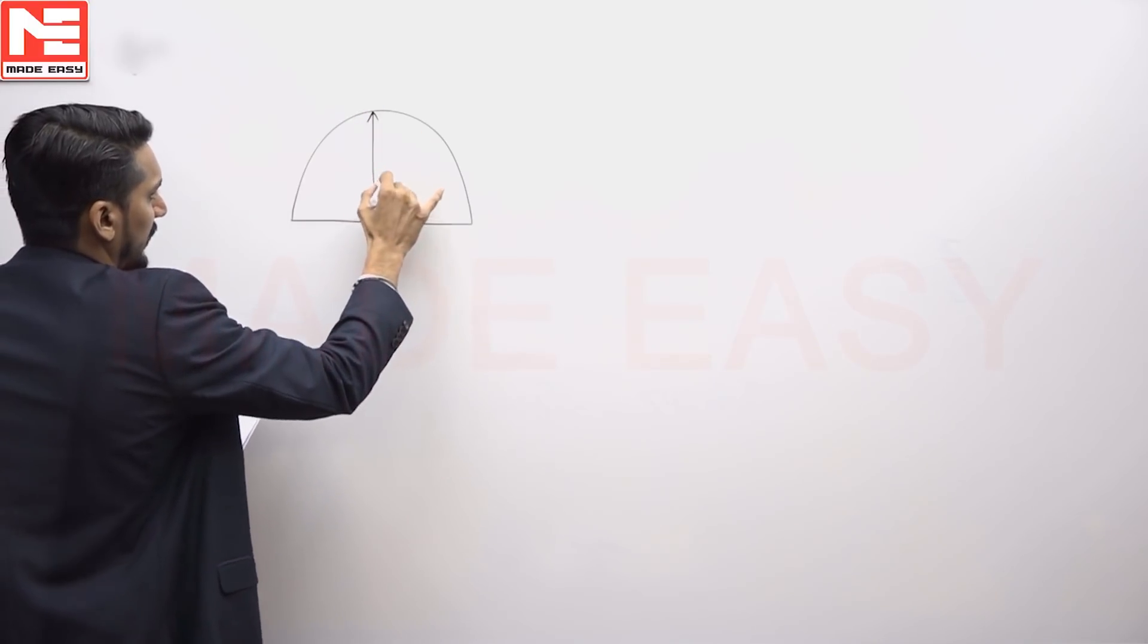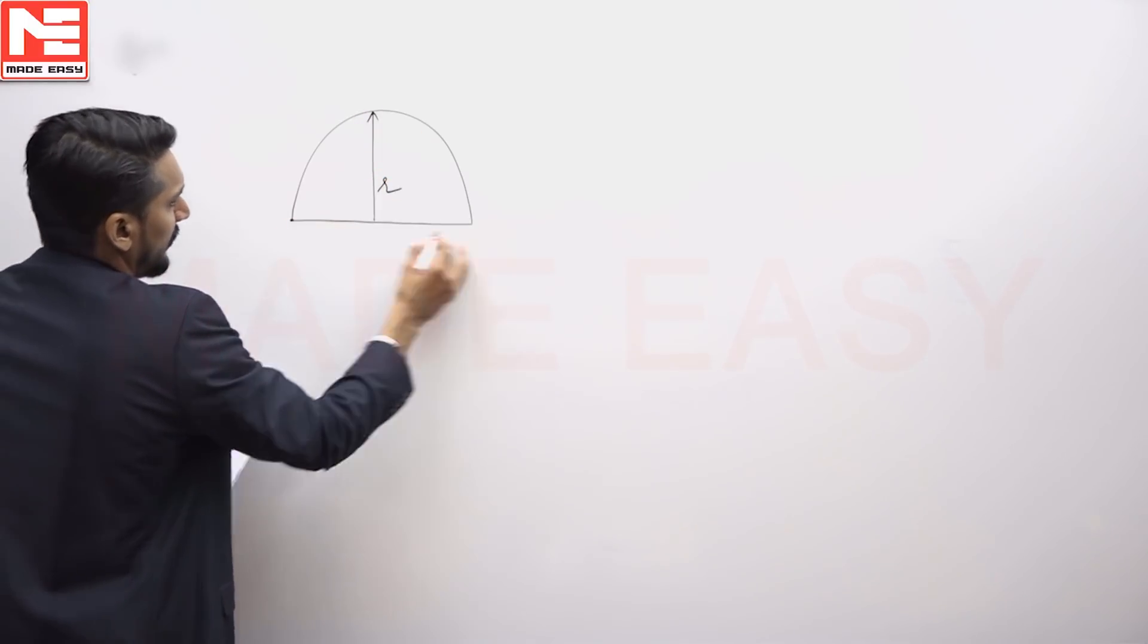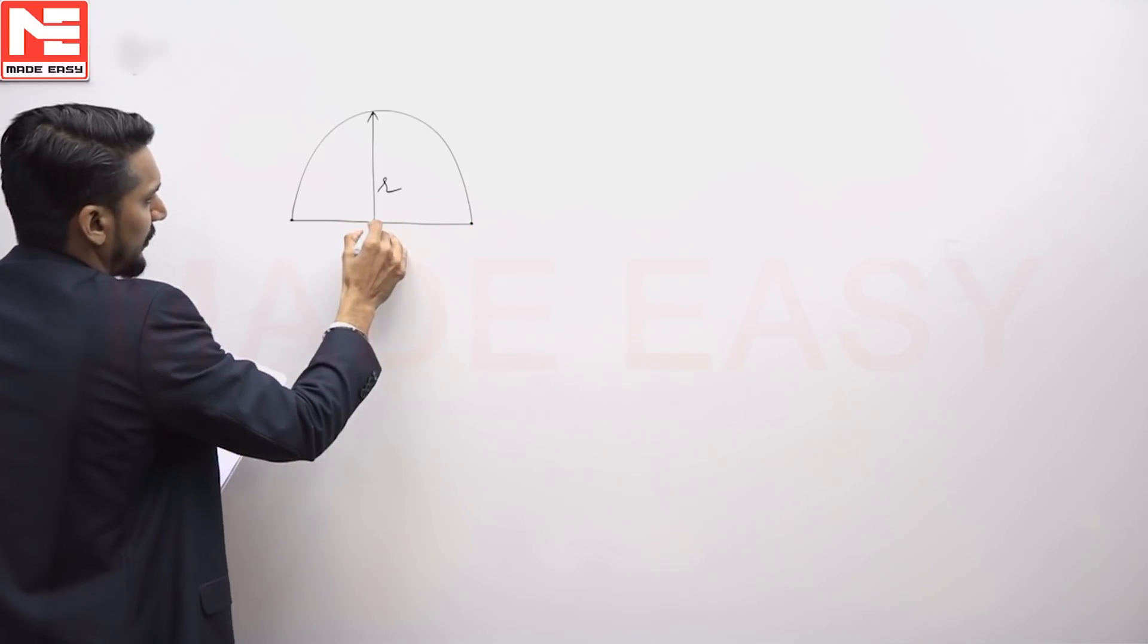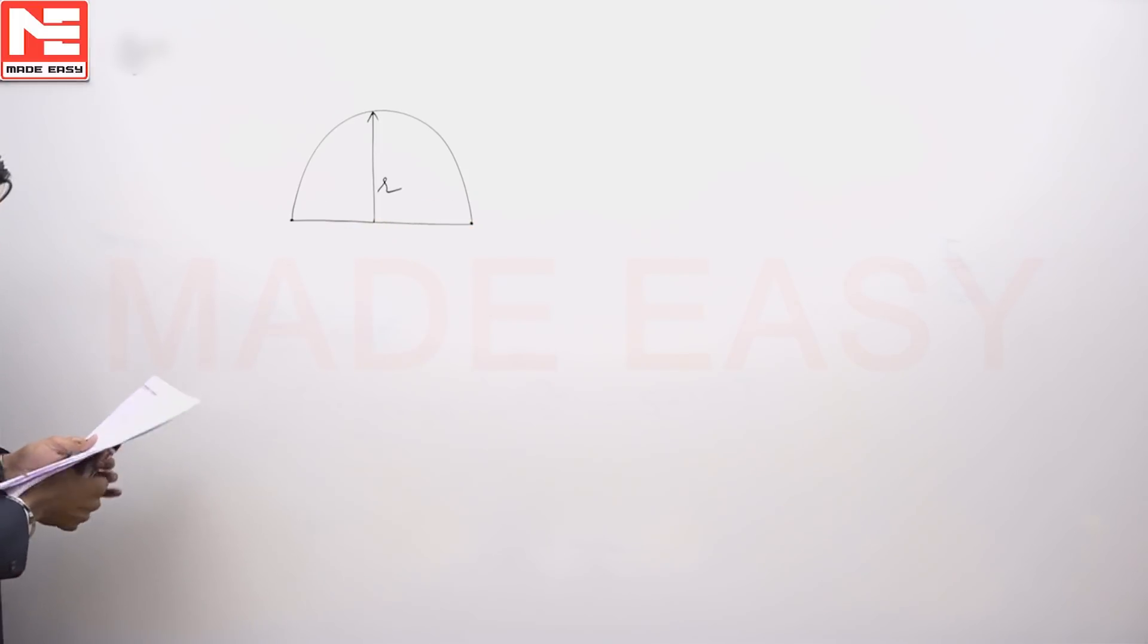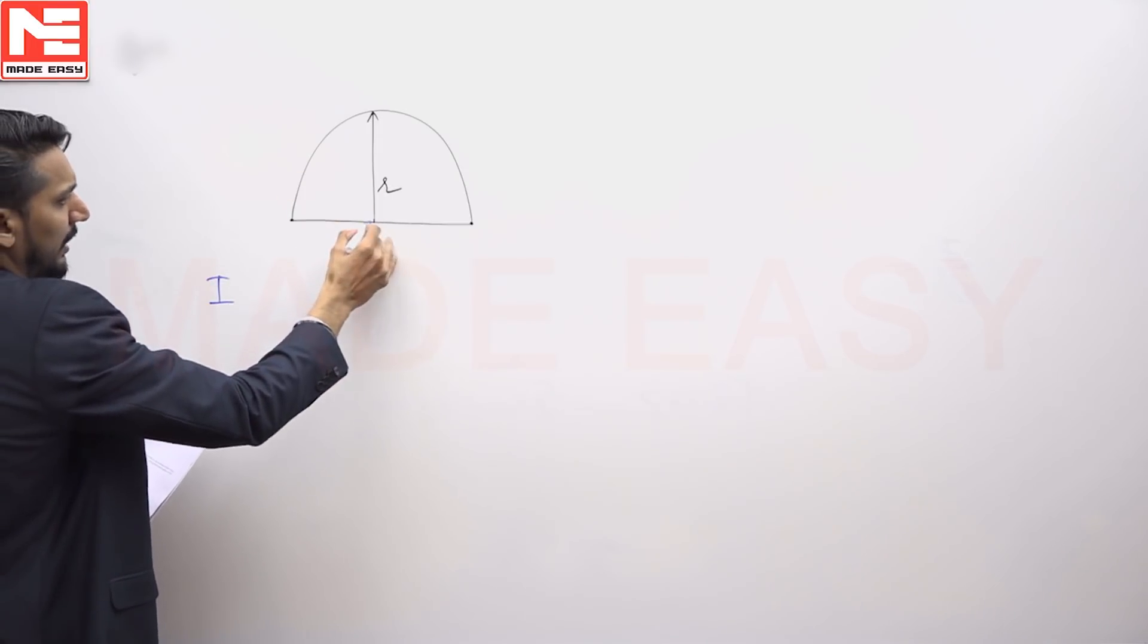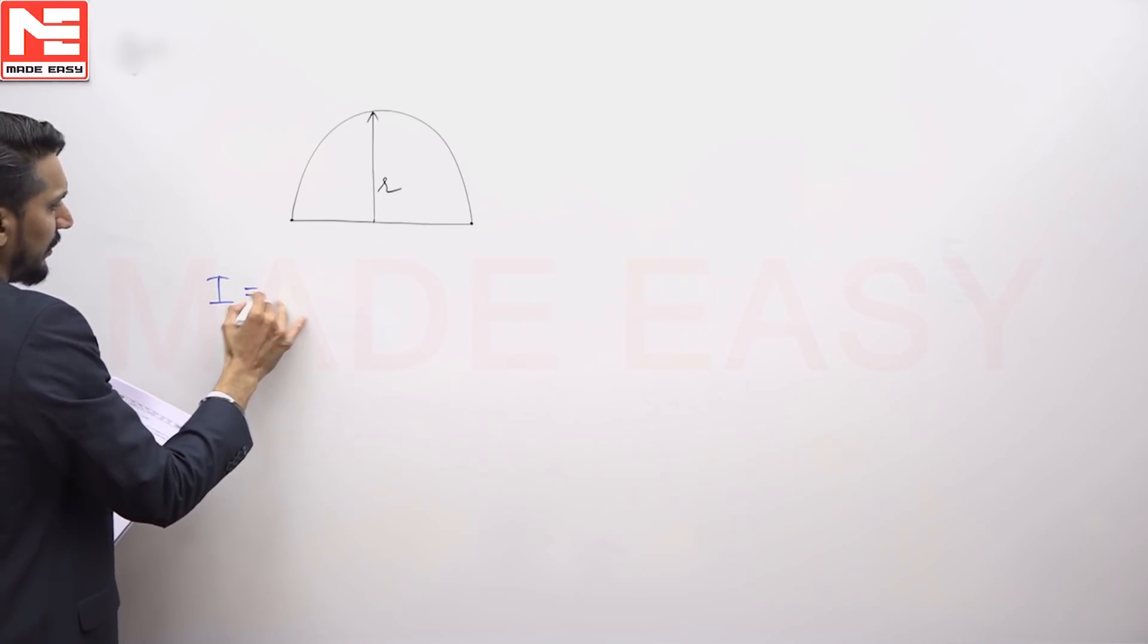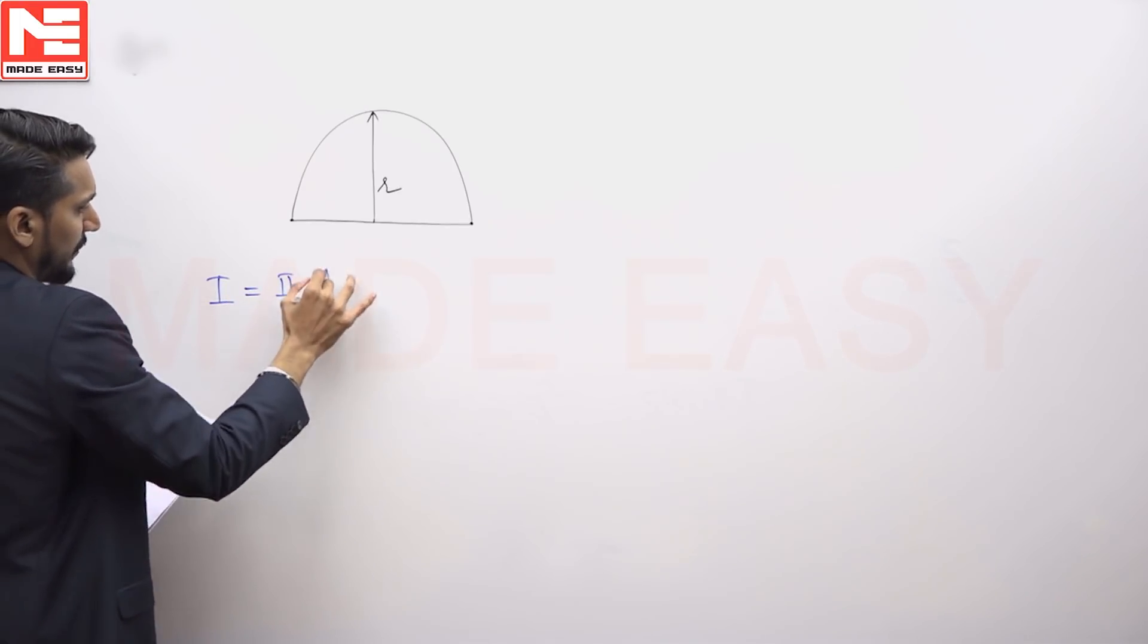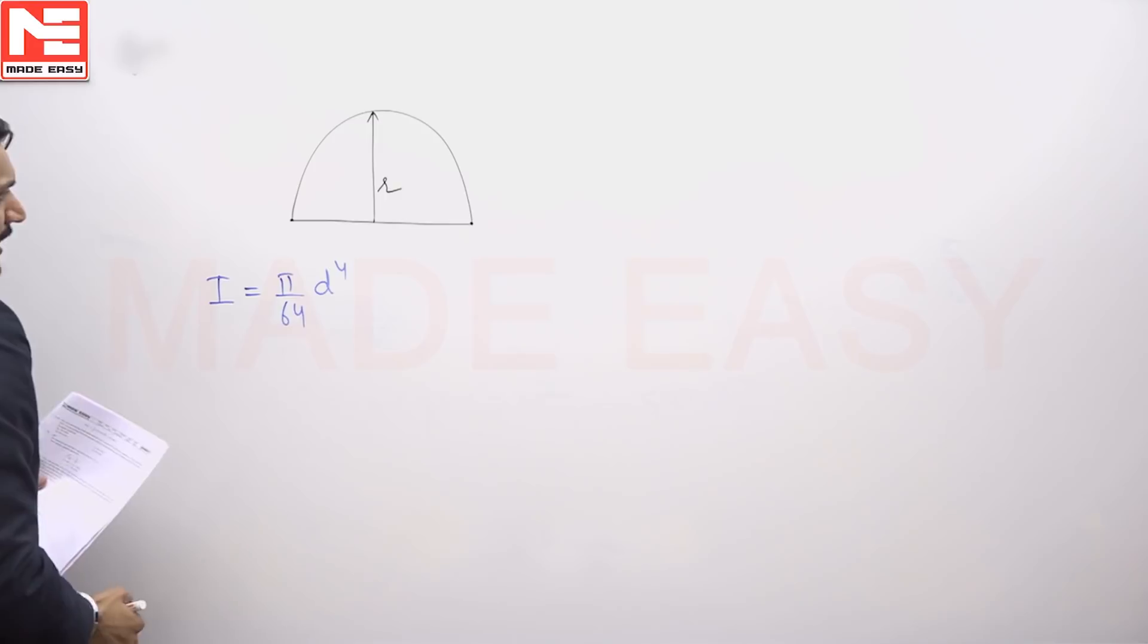The radius is R about this line. I hope we all understand that the area of this whole circle about this line is going to be π/64 d raised to power 4, and